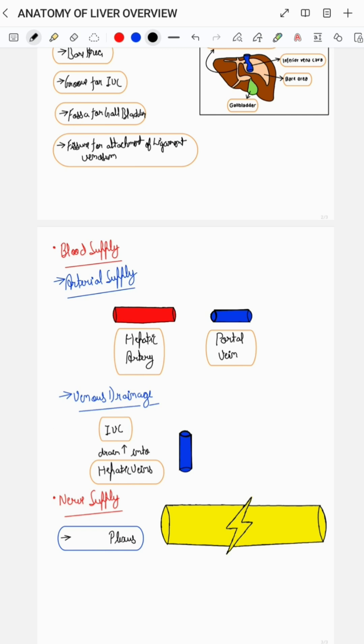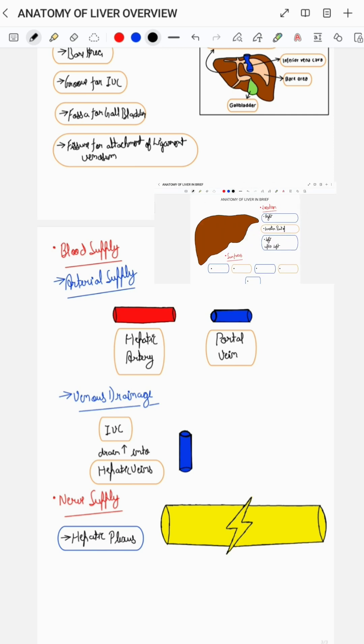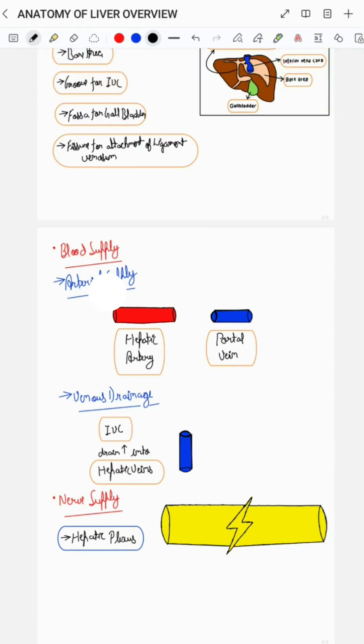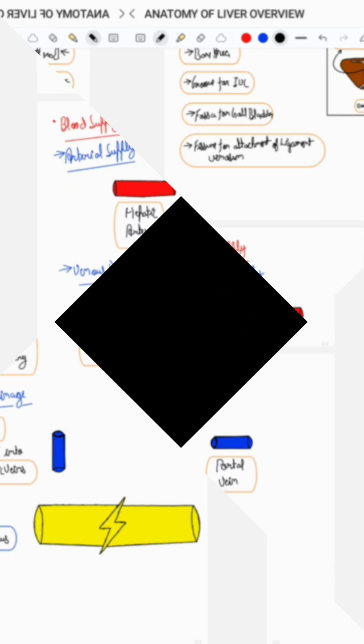The liver receives its nerve supply from the hepatic plexus. To know more about anatomy of liver you can check out my YouTube video on the same, the link for which has been mentioned in the description below. Thank you.